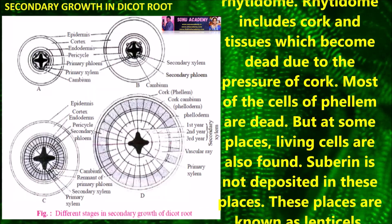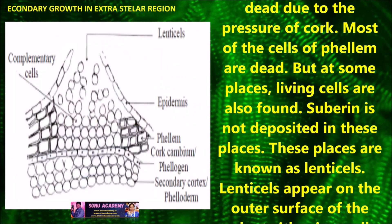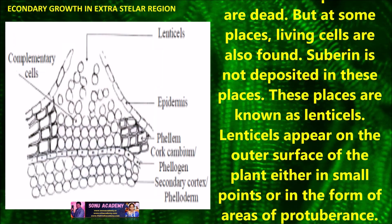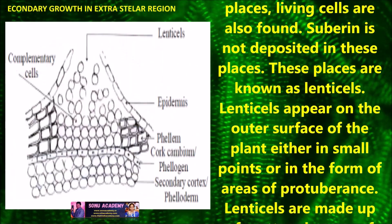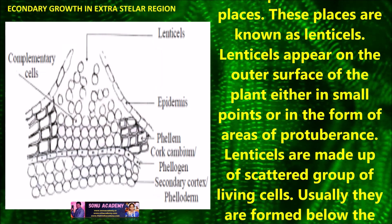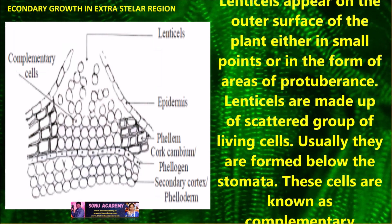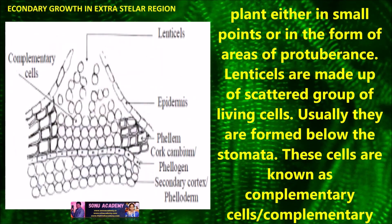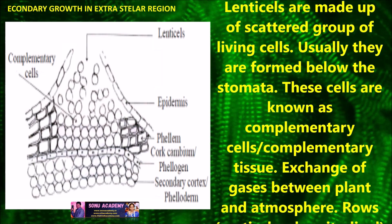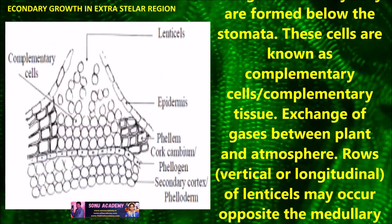Most of the cells in phellem are dead, but in some places living cells are also found. Suberin is not deposited in these places. These places are known as lenticels. Lenticels appear on the outer surface of the plant either as small points or in the form of areas of protuberance. Lenticels are made up of scattered groups of living cells and are usually formed below the stomata. These cells are known as complementary cells.